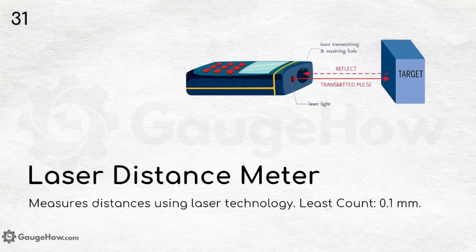Laser distance meter. It measures distances using laser technology with a least count of 0.1 mm. The picture shows exactly how the laser light is used for distance measurement.